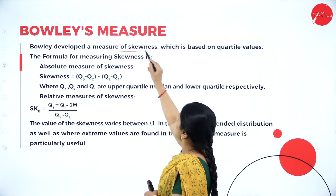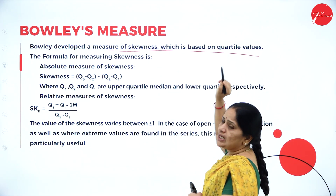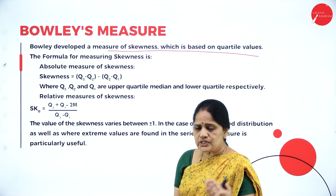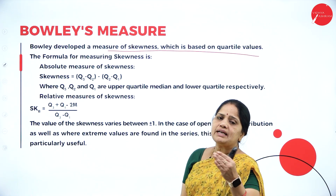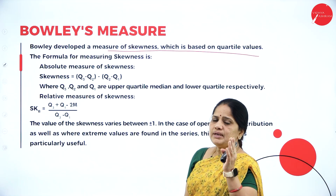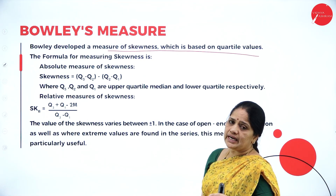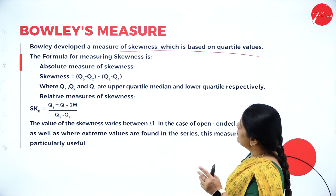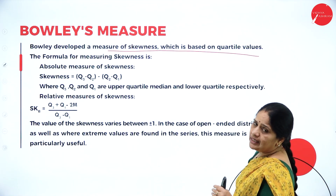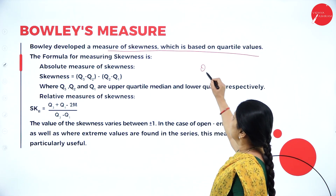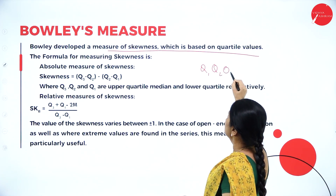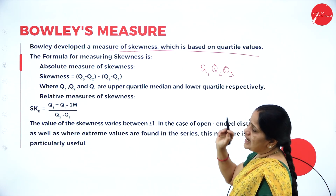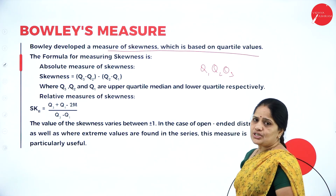Bowley developed a measure of skewness which is based on quartile values. If you recall, Carl Pearson's Measures of Skewness is based on the mean, median, mode, and the standard deviation — that is, mean minus mode divided by standard deviation. But Bowley developed a measure of skewness based on the quartile values Q1, Q2, and Q3.